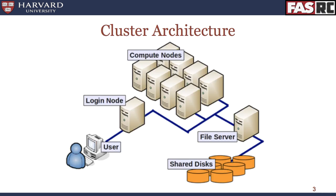First, let's talk about the architecture of a cluster. In this schematic, you will notice several things labeled in the little gray boxes. As a user, you will log in to a computer called the Login Node. This Login Node is essentially your gateway into accessing the resources on the compute cluster. You can request resources on any of the compute nodes using something called a Slurm Job Scheduler. All of the data on a compute cluster is always stored on shared disks, which ensures that all the nodes on the cluster have access to the data.